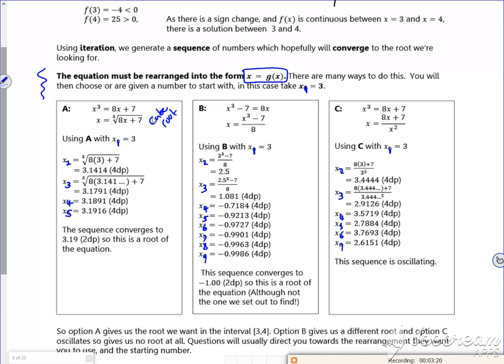Depending on the rearrangement depends on what the answer can give you. It can either fly off the wrong way and just make like a massive answer or it can hit the one you want. Or if there's more than one root, it might even go to the wrong root.